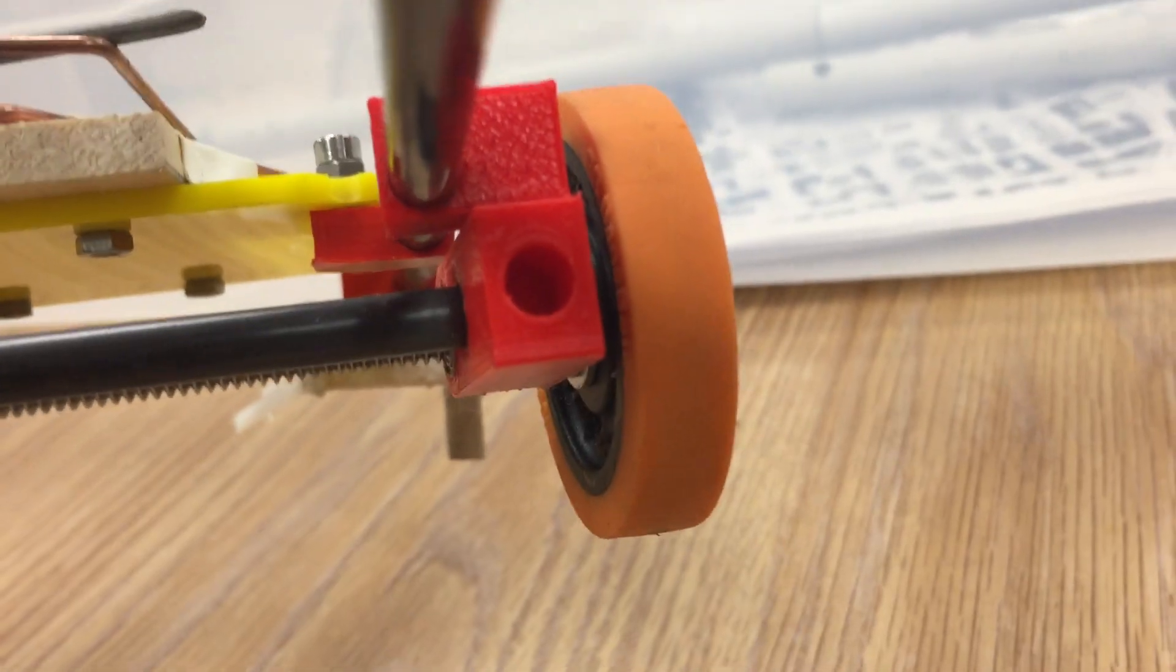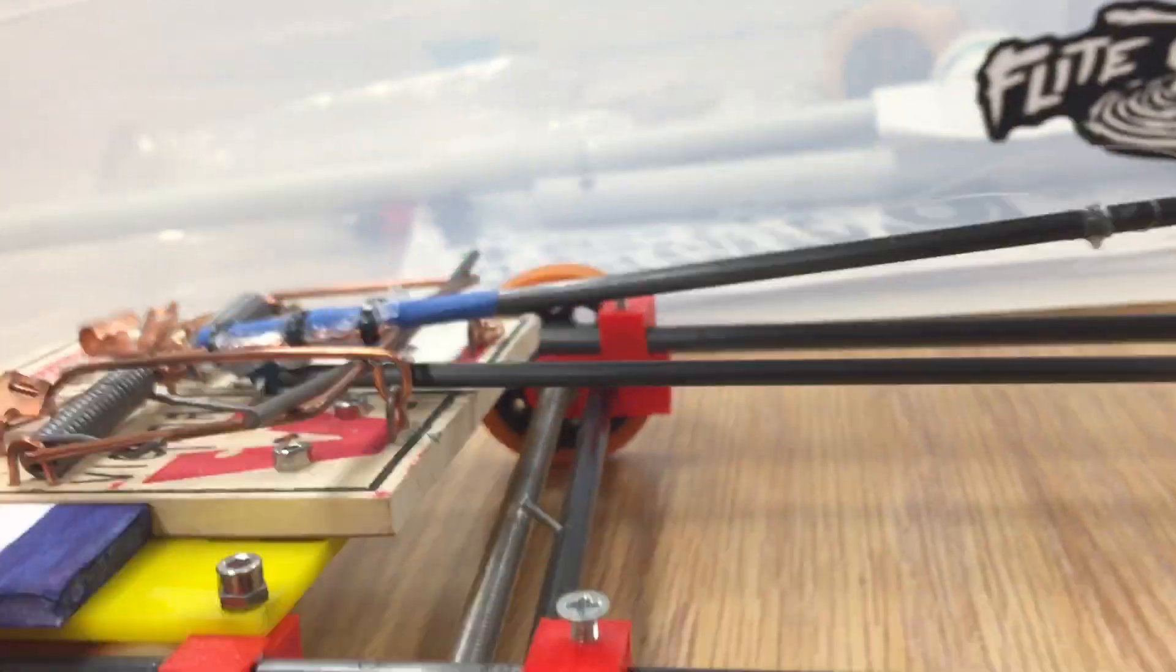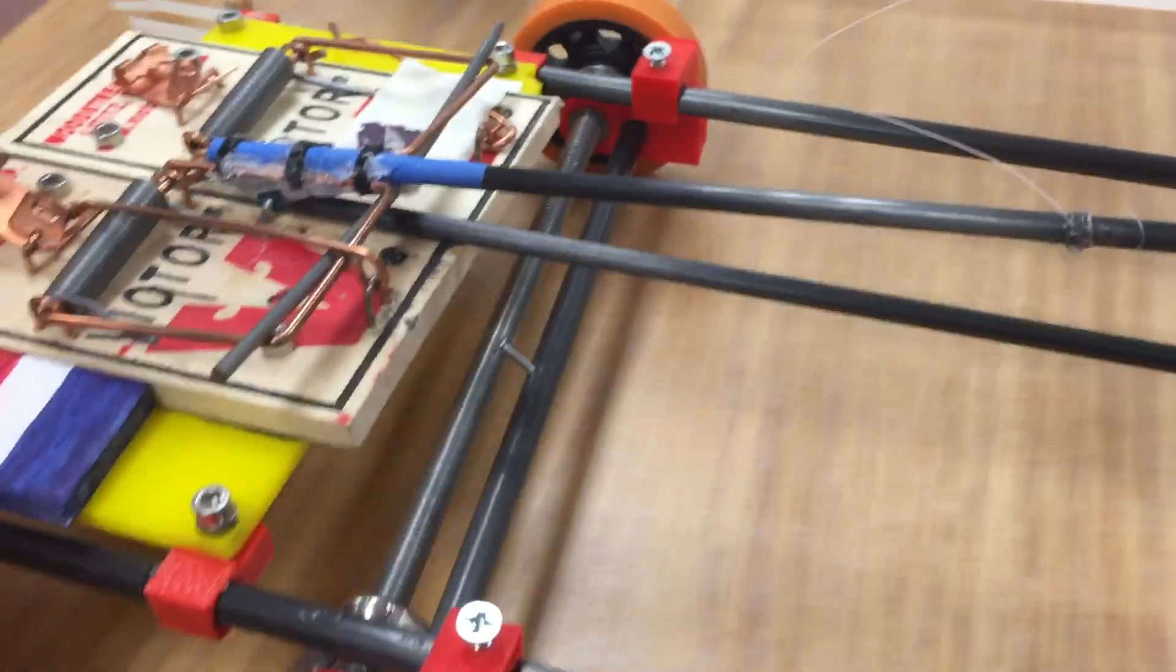That hole is unnecessary. I don't know why we kept that there. And then the threaded rod would spin as it ran and it would move forward, like so.